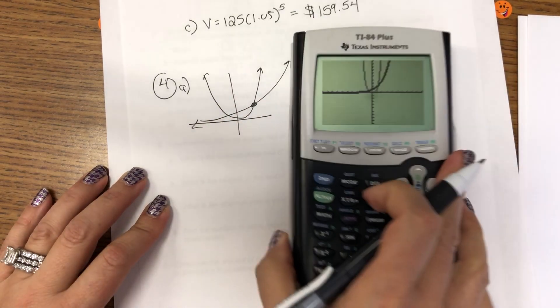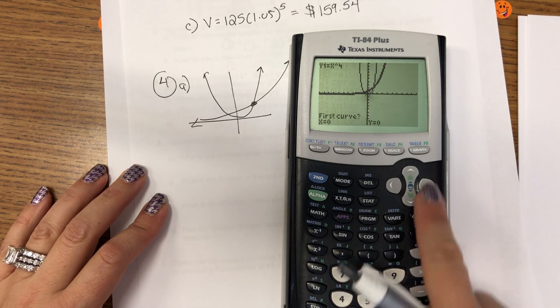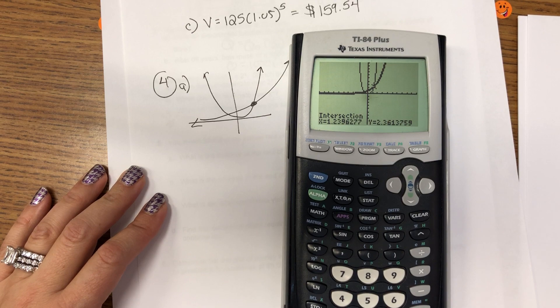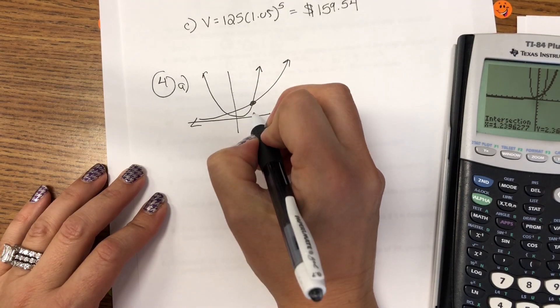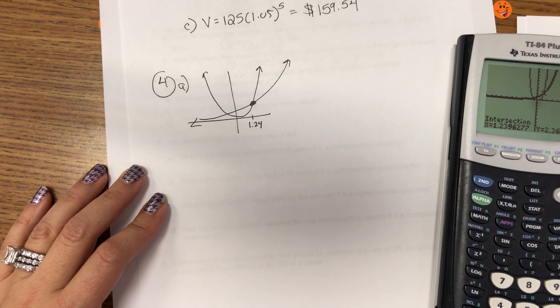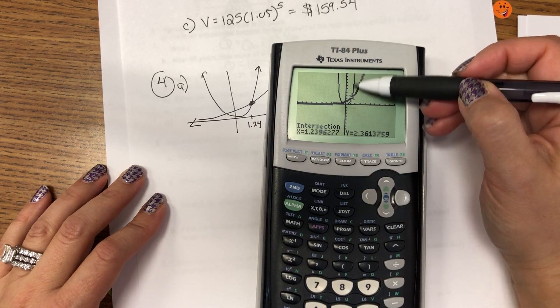So, if I sketch that, if here's the X to the fourth, here's my exponential. This point is second, trace, choice five is intersect, arrow to the spot, and hit enter three times at 1.24. So, this is when X is 1.24.